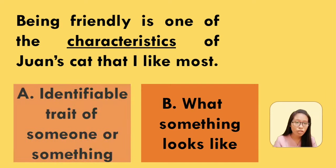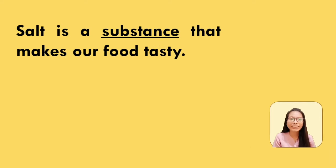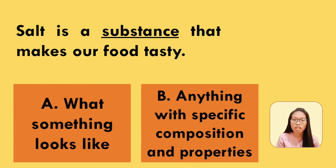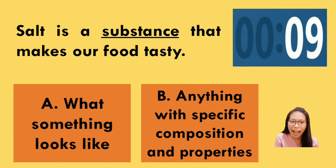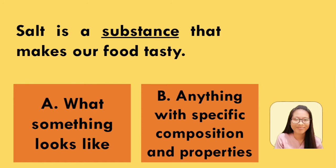The second sentence is: salt is a substance that makes our food tasty. The underlined word is substance. What do you think does it mean? Is it what something looks like, or anything with specific composition and properties? You're right again. The answer is letter B — it's anything with specific composition and properties.